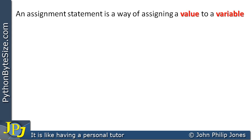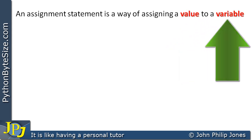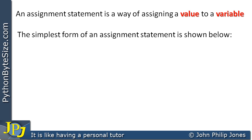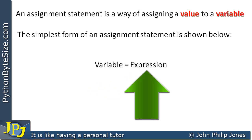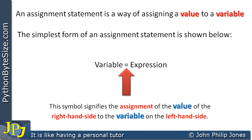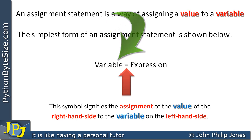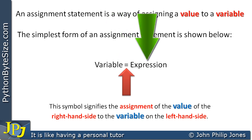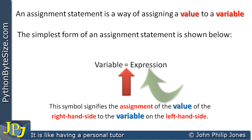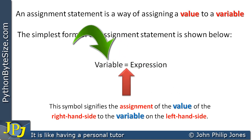An assignment statement is a way of assigning a value to a variable. The simplest form is shown as: variable equals expression. This symbol signifies the assignment of the value of the right-hand side to the variable on the left-hand side. The expression could be some kind of calculation, and whatever is worked out on the right-hand side is copied to the variable on the left-hand side.